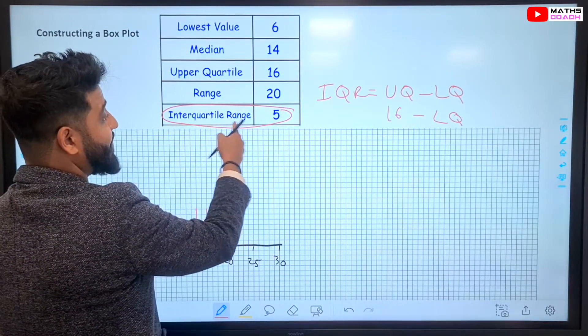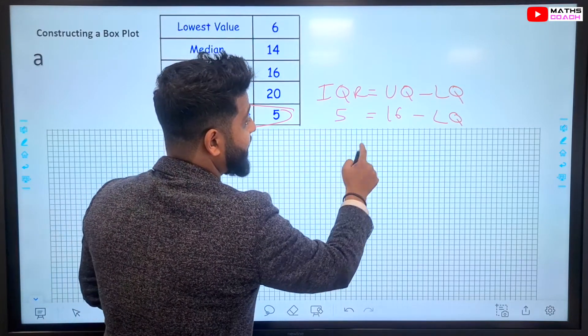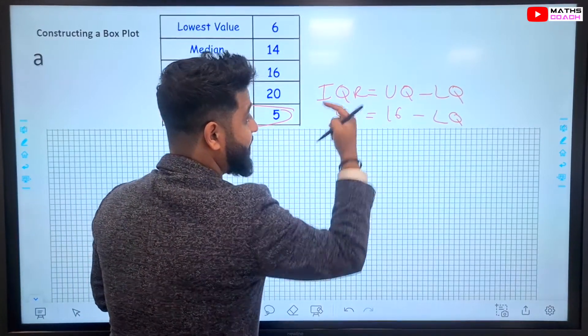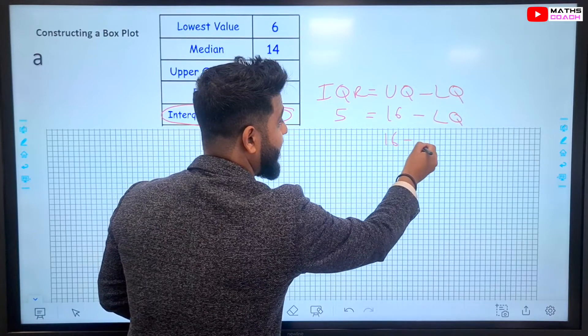16 minus the lower quartile. And what does that give us, the interquartile range? It gives us 5. That means 16 minus something, that gives us 5. It can only be 16 minus 11.